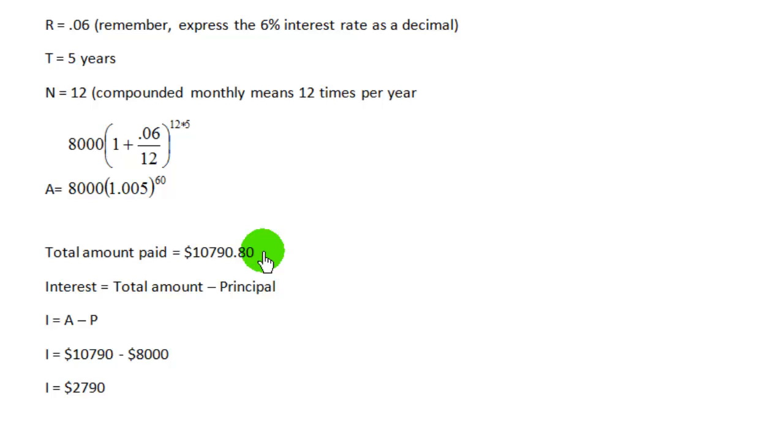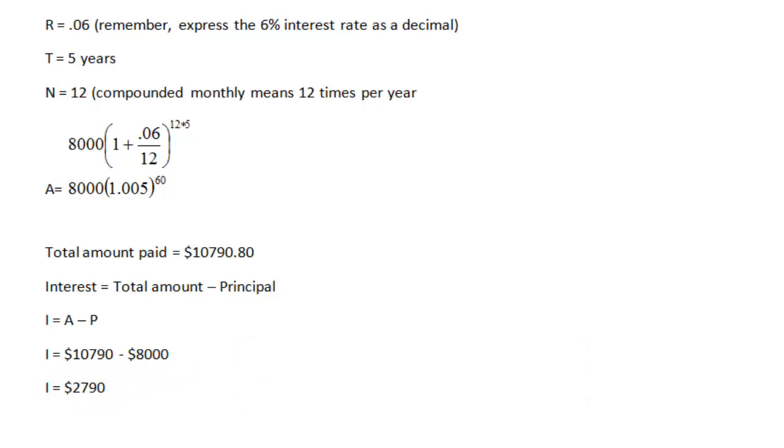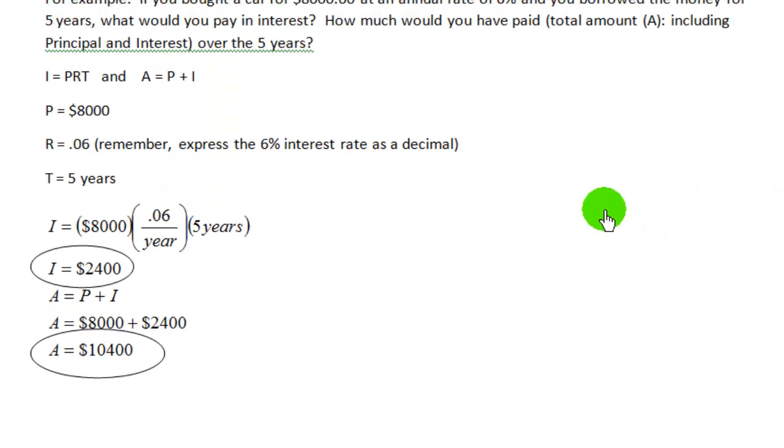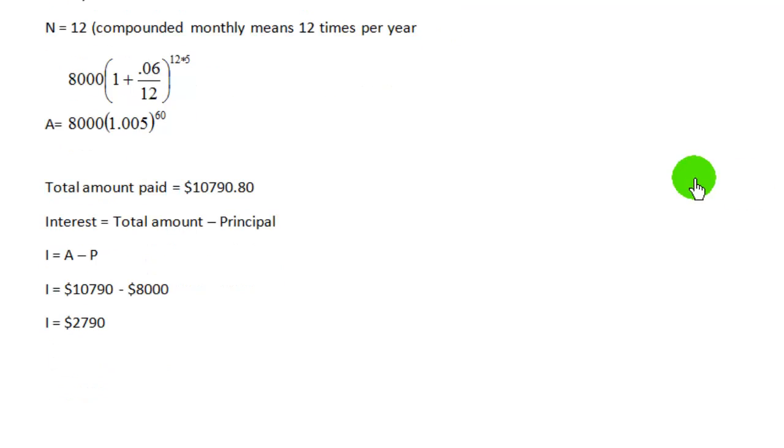To find the interest, you take the total amount, subtract out the principal, and that will give you the interest. We know that the principal is $8,000. We'll take $10,790, subtract $8,000, and come up with an interest total payment of $2,790. If you compare that to simple interest, which just means compounded once a year, you come up with interest of $2,400. The more times you compound in one year, the greater the interest is going to be.